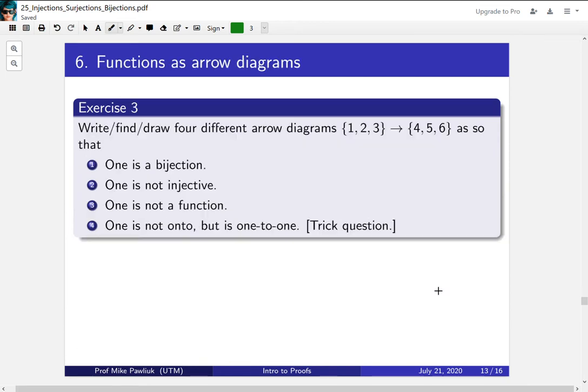Let's look at one way to see functions as arrow diagrams, which will really help visualize what injections and surjections look like. So I want you to write, find, or draw four different arrow diagrams that go from the set {1, 2, 3} to the set {4, 5, 6}, so that the first one is a bijection, the second one is not injective, the third one is not a function, and the fourth one is not onto but it is one-to-one. And as a warning, the fourth one is a trick question.